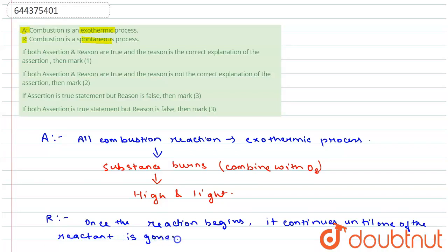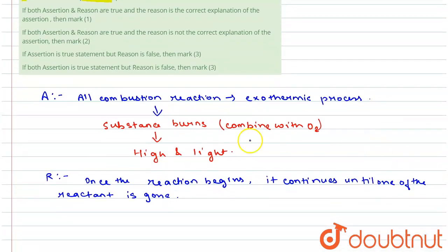So yes, both statements are correct, but reason is not a correct explanation of assertion. So I can say that assertion and reason are true, but reason is not the correct explanation of the assertion.